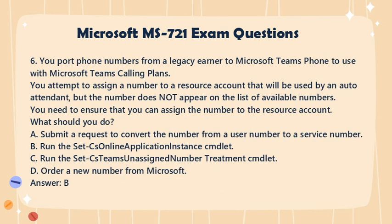Question 6. You port phone numbers from a legacy carrier to Microsoft Teams Phone to use with Microsoft Teams Calling Plans. You attempt to assign a number to a resource account that will be used by an auto attendant, but the number does not appear on the list of available numbers. You need to ensure that you can assign the number to the resource account. What should you do? a. Submit a request to convert the number from a user number to a service number. b. Run the Set-CsOnlineApplicationInstance cmdlet. c. Run the Set-CsTeamsUnassignedNumberTreatment cmdlet. d. Order a new number from Microsoft. Answer: a.